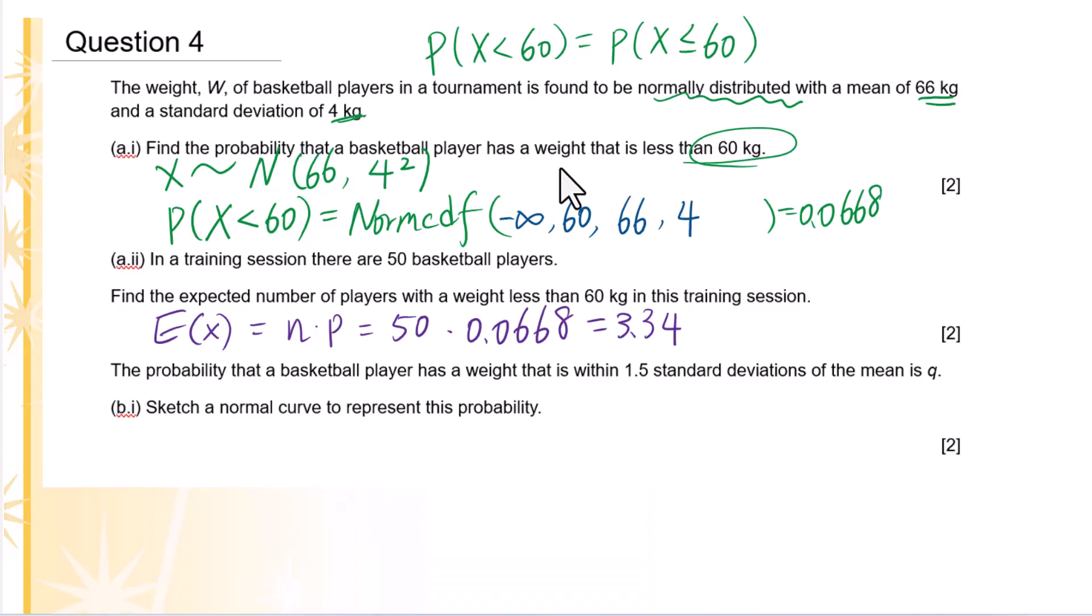The probability that a basketball player has a weight that is within 1.5 standard deviations of the mean is Q. Sketch a normal curve to represent this probability. Standard deviation is 4, 1.5 times 4 equals 6. Mean is 66, minus 6 equals 60, 66 plus 6 equals 72. Let's sketch the graph.